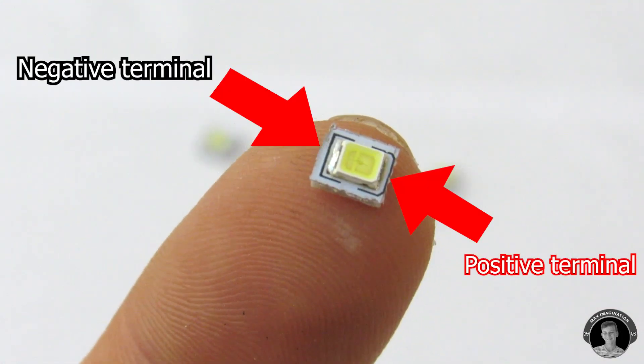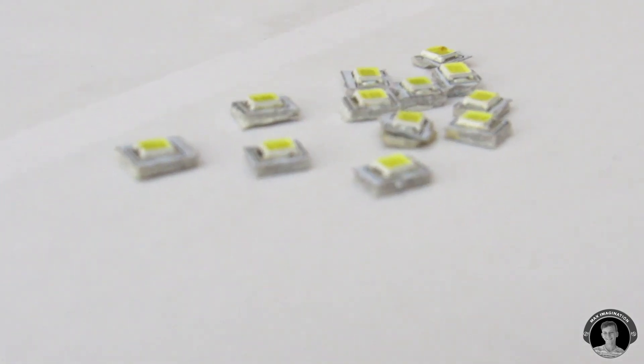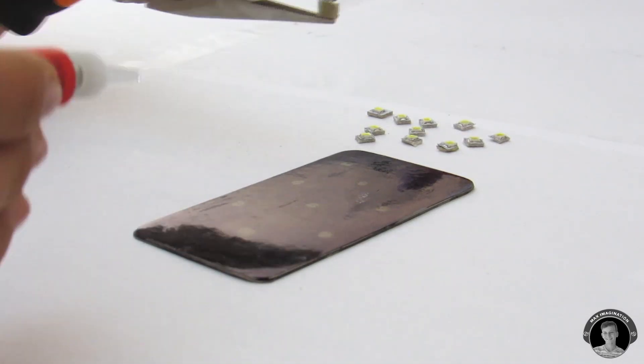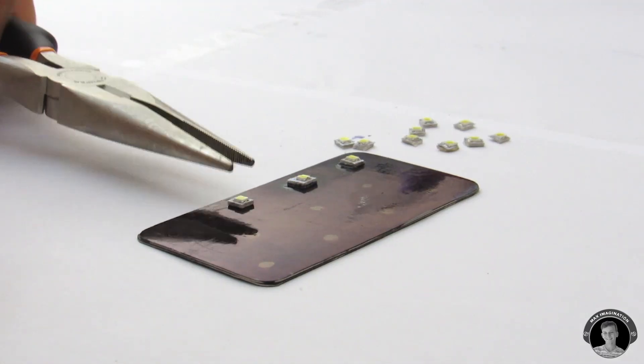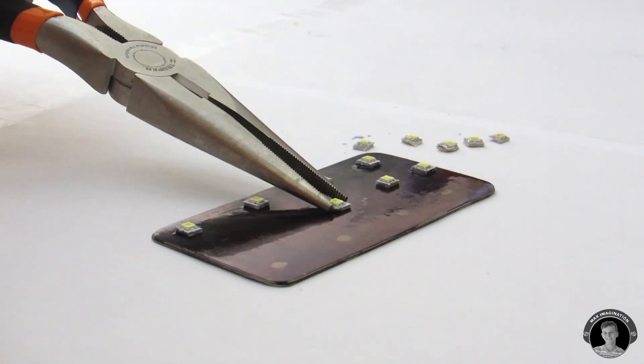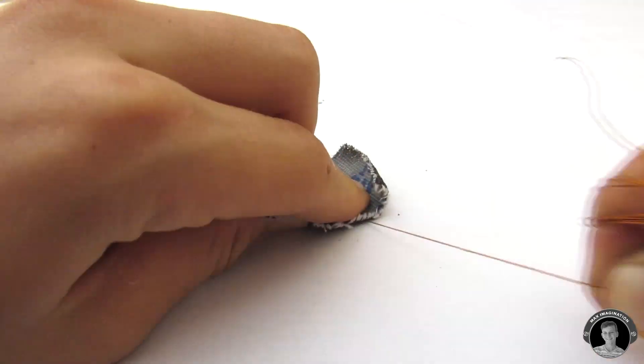You can easily tell which terminal is which by looking at the very middle of the LED. Keeping that in mind, now we're going to glue all the LEDs to this business card. My LEDs, all the negative terminals are facing left and all the positive terminals are facing the right direction. Now you're going to strip the copper wire that you're about to use.